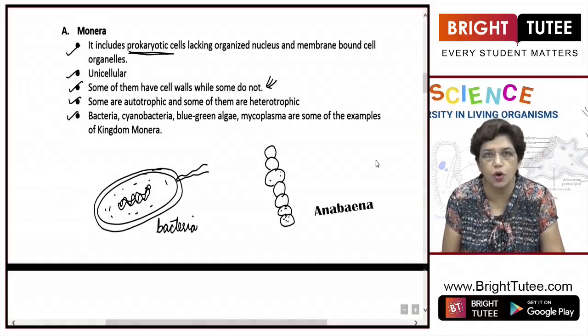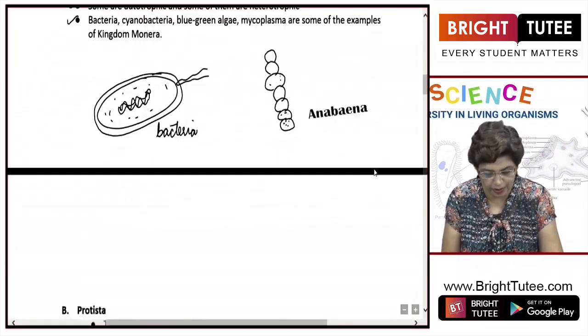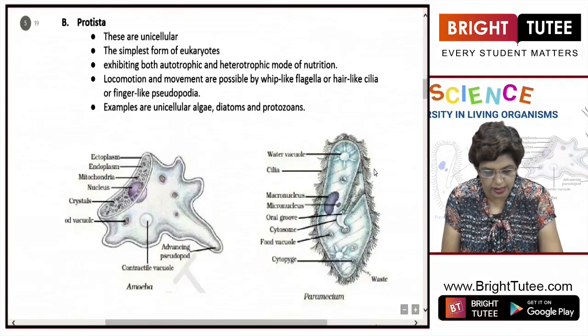These are the features of the first kingdom, that is Monera. Let's move on to the next kingdom, that is Protista.